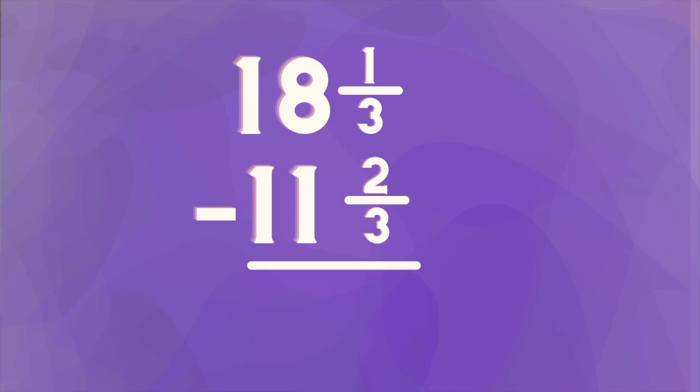We have 18 and one-third minus 11 and two-thirds. That should work. If I have over 18, I can certainly subtract a little over 11 from there. But when I start to subtract and start on the fraction side, I see I've got one-third minus two-thirds. So I have enough, but it must not be in the right form that I need. So we're going to trade it in.